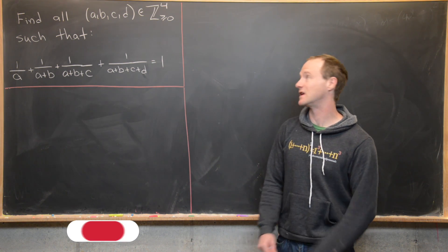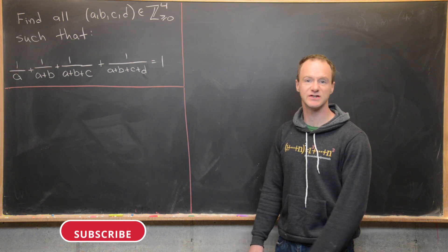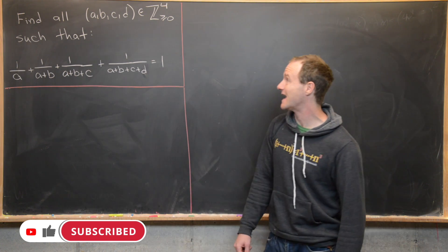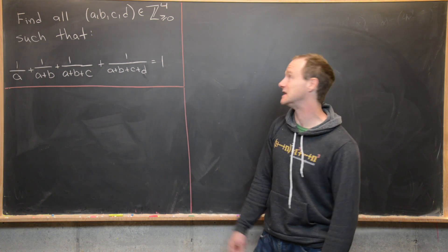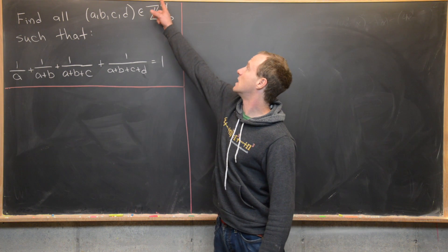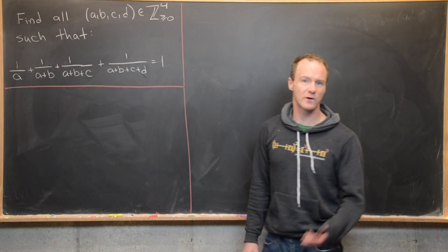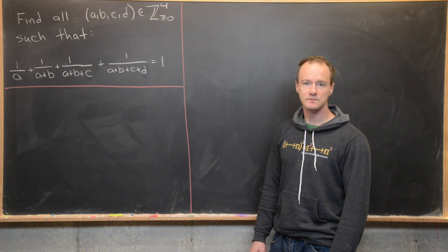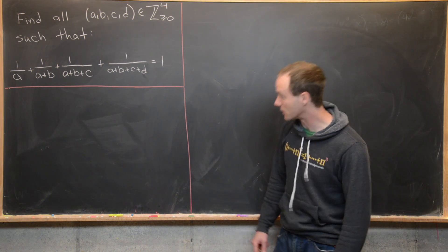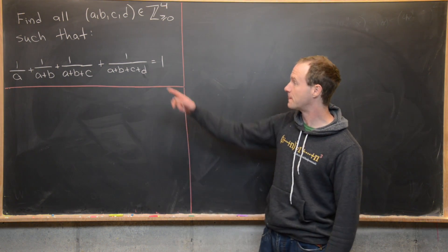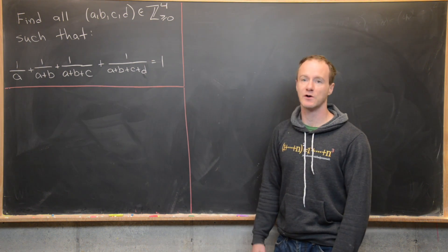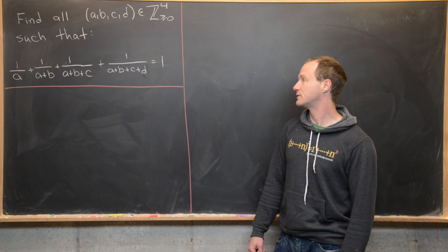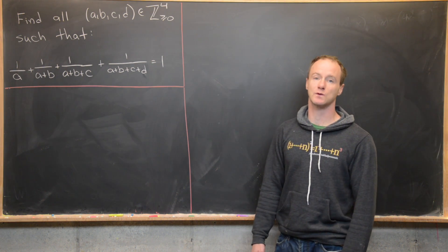Here we're going to solve a nice equation over the non-negative integers. Our goal is to find all quadruples A, B, C, and D in the non-negative integers to the fourth — so each of A, B, C, D is a non-negative integer — satisfying: 1/A + 1/(A+B) + 1/(A+B+C) + 1/(A+B+C+D) = 1.